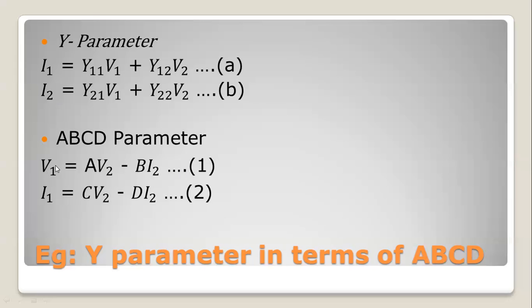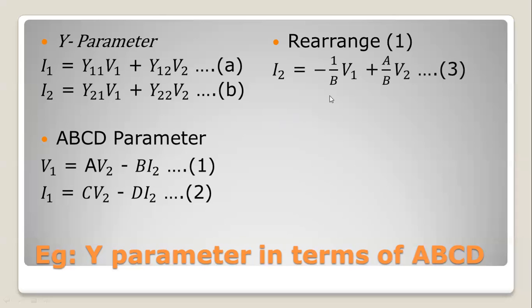Rearranging the first equation: we rearrange to find the I2 value — minus B·I2 plus B·I2, then minus B·I2. The I2 value is substituted and rearranged.